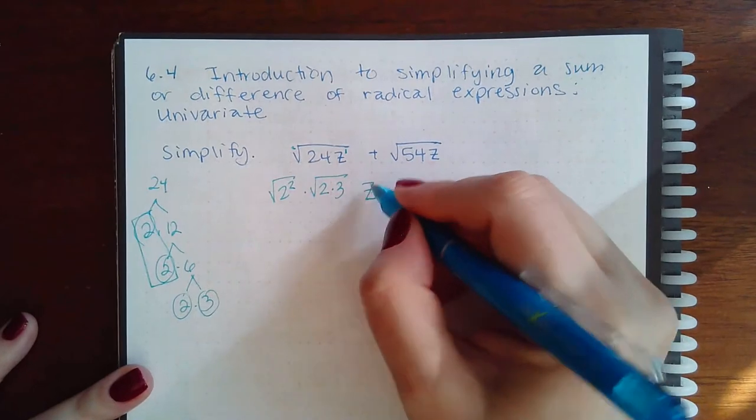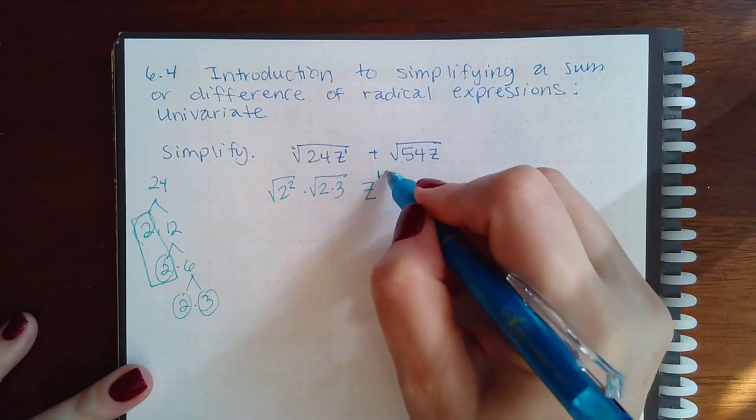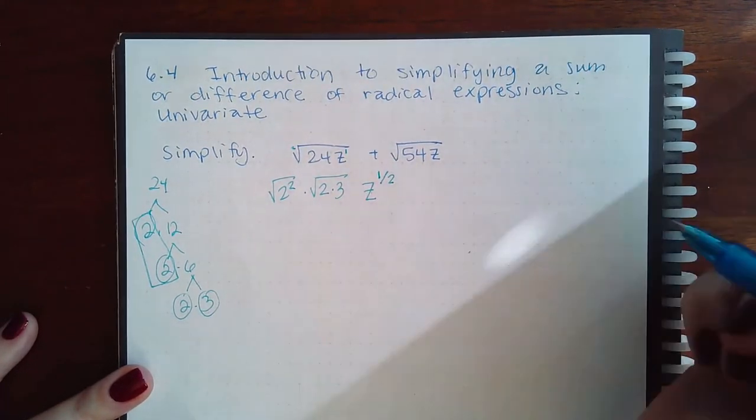Then the z, the variables, we always do it by the exponent divided by the index, which is a 2.